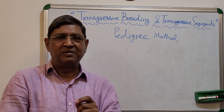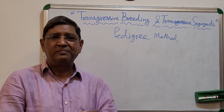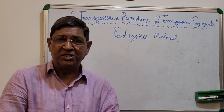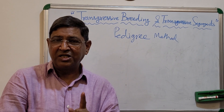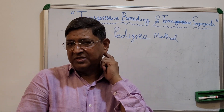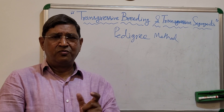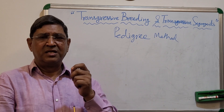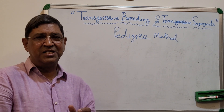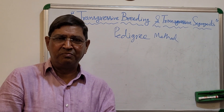So this is what transgressive segregants are. Please don't confuse — they are individuals found superior to both the parents in the segregating generation. The segregating generation starts from F2 generation: F2, F3, F4, F5, F6. But the best generation for finding and selecting transgressive segregants is F2 and F3. So this is the complete concept of transgressive segregants and transgressive breeding. Thank you very much.